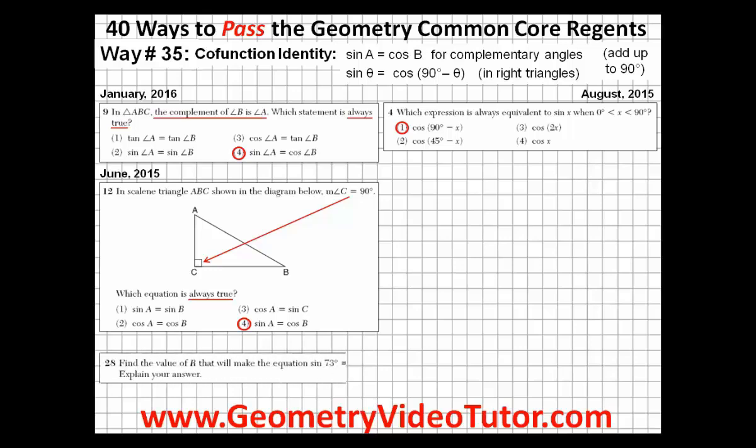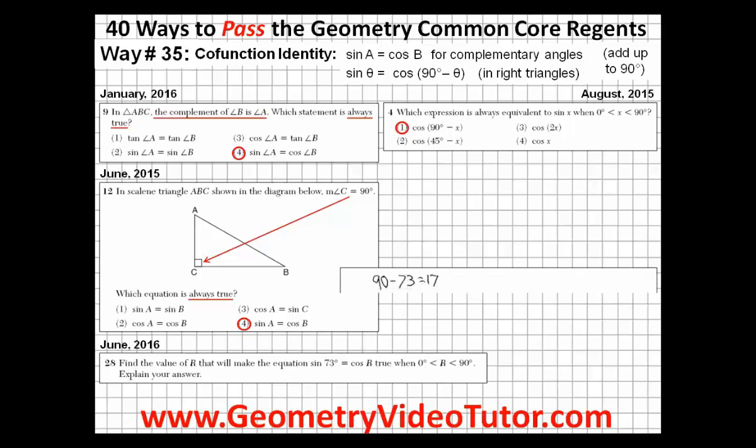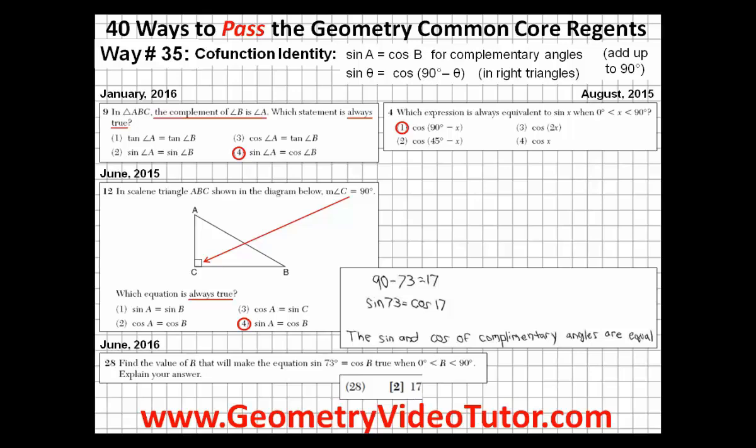See if you could answer this short answer question from the June 2016 geometry common core regents. If you said that R is equal to 17 degrees and provided the correct explanation, you'd earn yourself an easy two points.